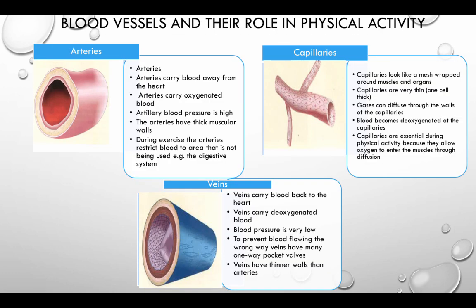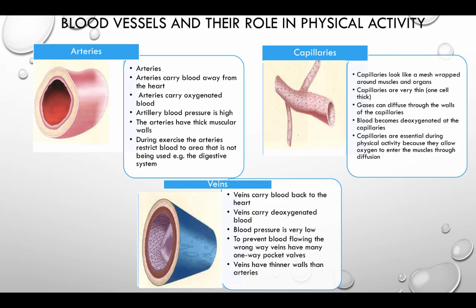Blood vessels and their roles in physical activity. There are three different types of blood vessels. The arteries carry blood away from the heart and carry oxygenated blood. Artery blood pressure is high. The arteries have thick muscular walls. During exercise the arteries restrict blood to areas not being used, for example the digestive system.